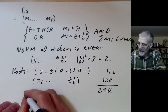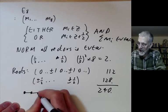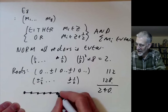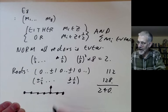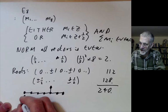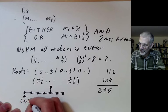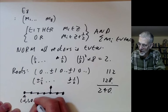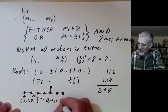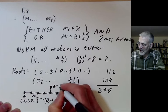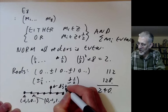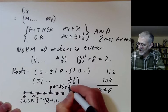E8 has two sorts of roots: vectors with two entries of ±1 and the rest zero — there are 112 of these — and vectors with all entries ±1/2 satisfying the even-sum condition, giving 128 of them (256 divided by 2 due to the parity condition). So there are 240 roots altogether. The Coxeter/Dynkin diagram has seven nodes in a line with one extra node branching off, giving the famous E8 diagram.